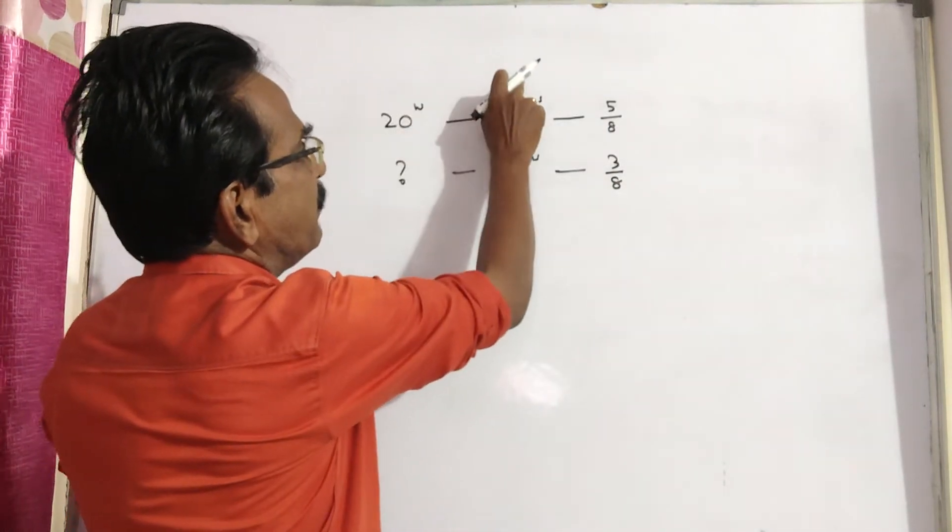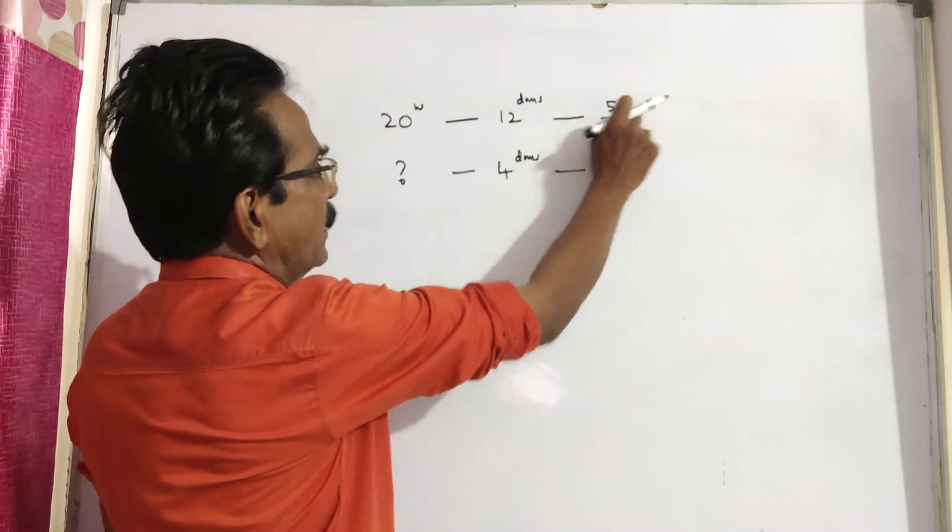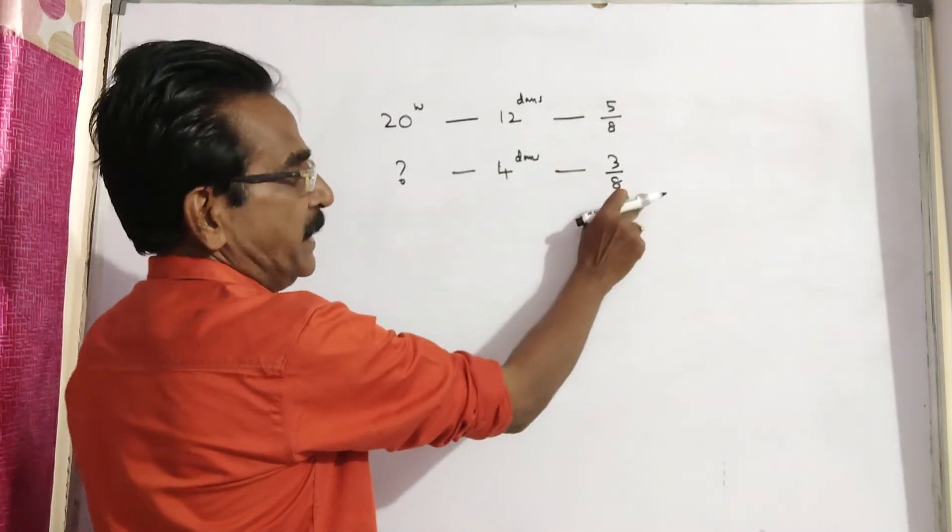We know M1 D1 by W1 is equal to M2 D2 by W2.